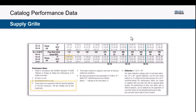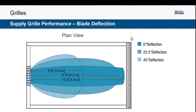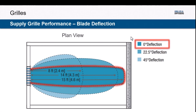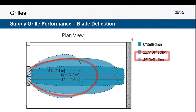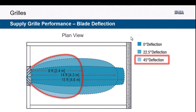In the case of grills, we catalog throw lengths at three different blade angles, because the blades are adjustable on site. Looking at a zero-degree deflection, we can see it gives a much narrower pattern that travels further, giving longer throw lengths. With a 22.5-degree deflection, the wider spread results in shorter throw lengths. And with 45 degrees, it shortens even more. When designing a space and selecting the appropriate product, that spread is important.